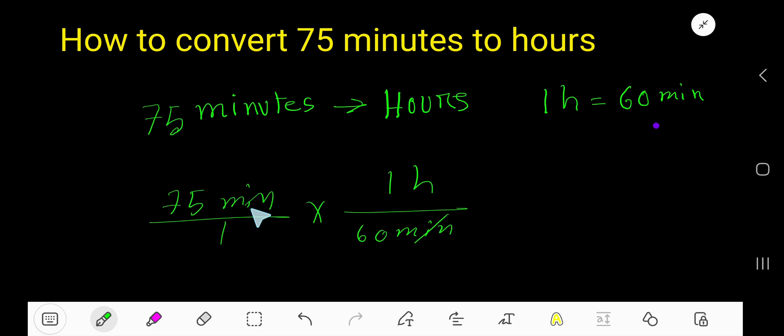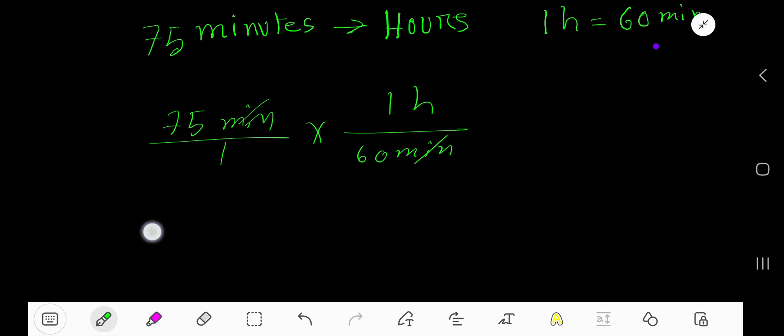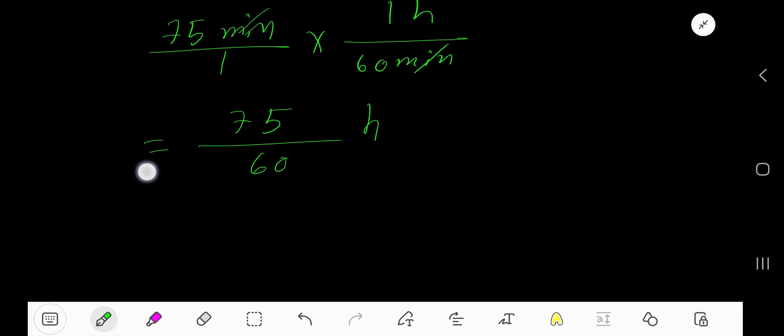So multiply: 75 times 1 which is 75. 1 times 60 is 60. Now we have 75 over 60 hours.